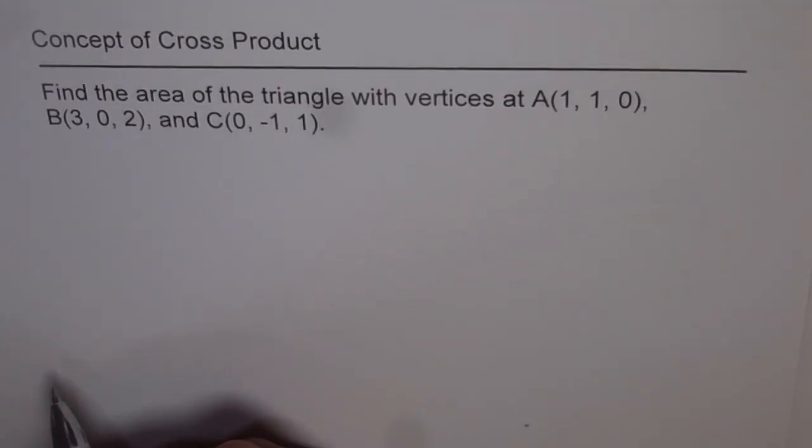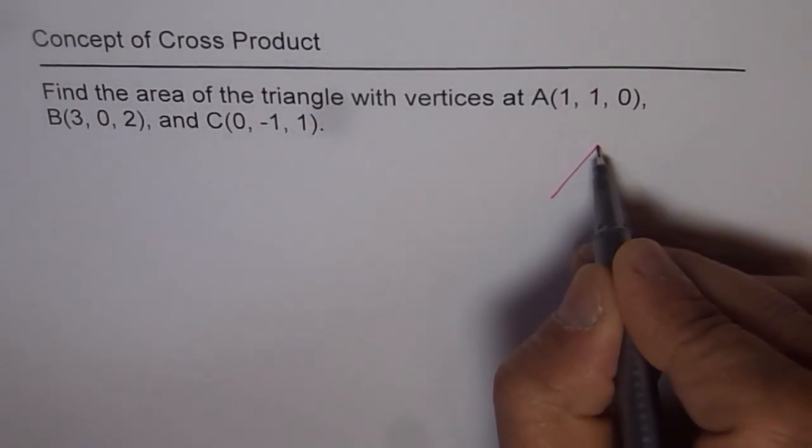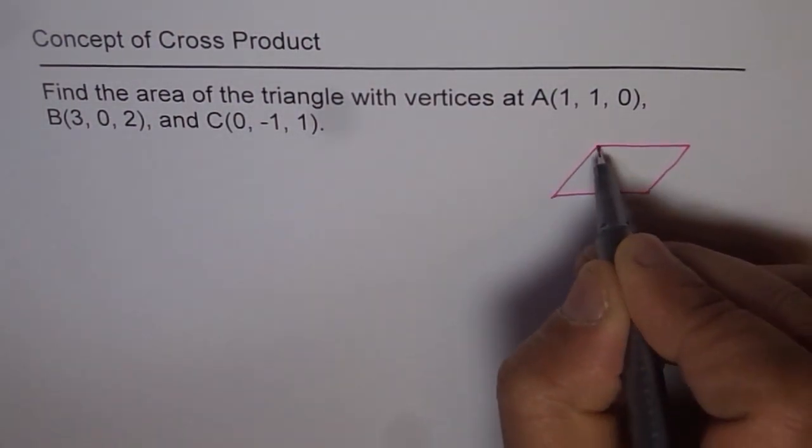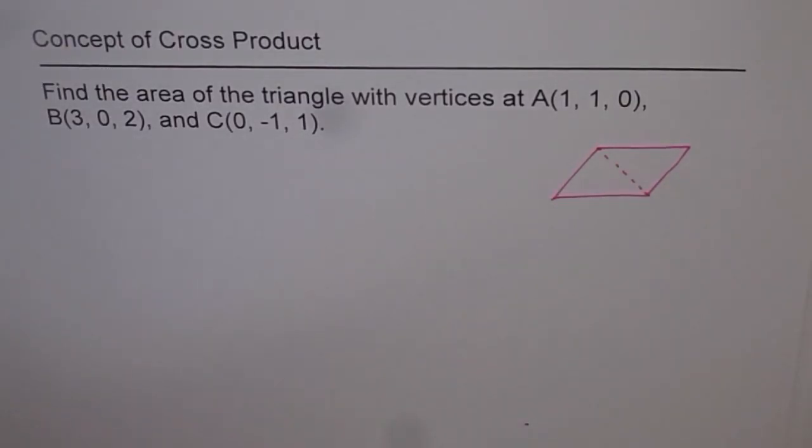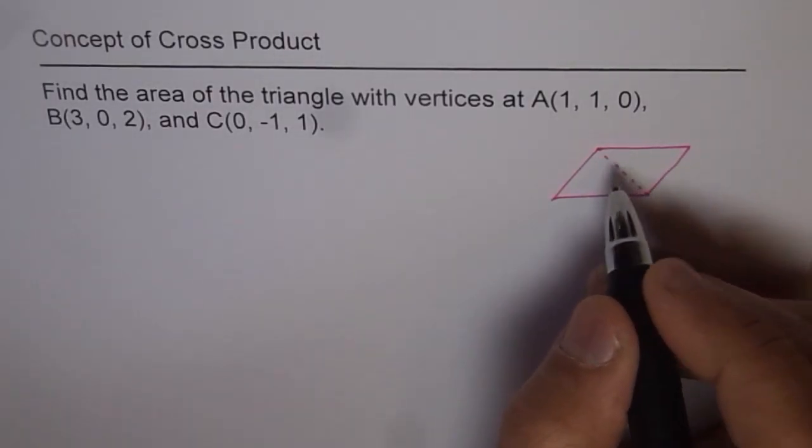Now, as you know, geometrically, cross product gives you area of a parallelogram. A parallelogram is kind of two triangles. So when we are talking about a triangle, then the area of triangle will be half the area of parallelogram.